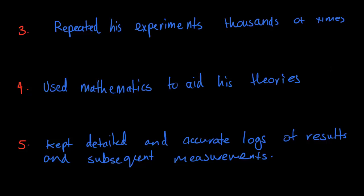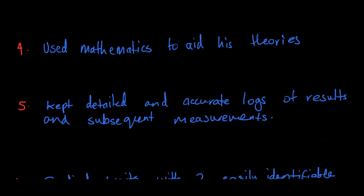Number five: he kept an accurate log of results and subsequent measurements. Every single time he measured how tall a pea plant was, or measured the number of pea plants with a certain color, he recorded it straight away and kept all these measurements listed neatly. He was able to refer to these whenever he needed to make equations or speculations based on his experiments.